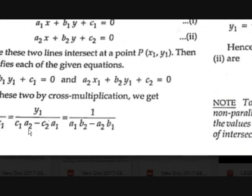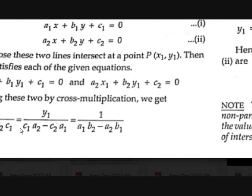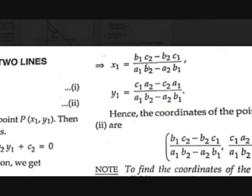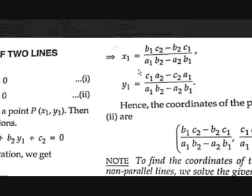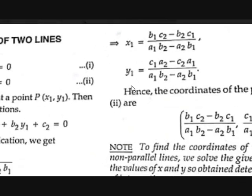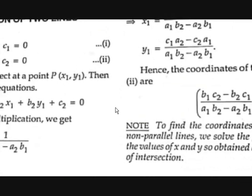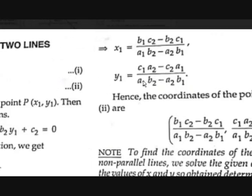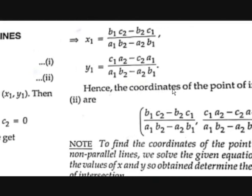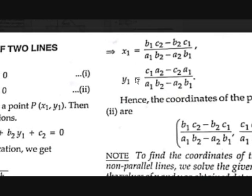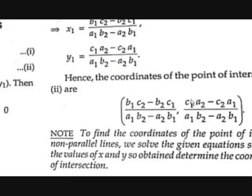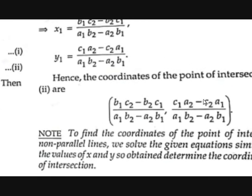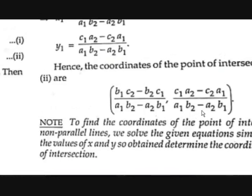Taking the first and last parts, X1 = (B1C2−B2C1)/(A1B2−A2B1), and similarly Y1 = (C1A2−C2A1)/(A1B2−A2B1). Hence the coordinates of the point of intersection are: ((B1C2−B2C1)/(A1B2−A2B1), (C1A2−C2A1)/(A1B2−A2B1)).